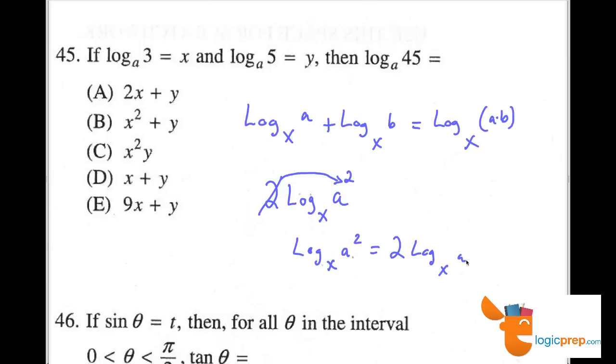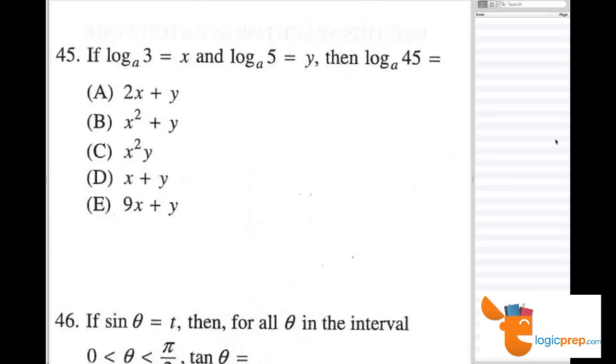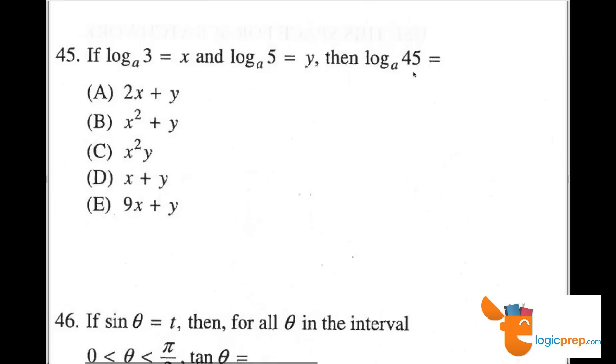So if we know those two rules, we're now equipped with the log rules we need to answer this problem. Now, we have 45 and we have to ask ourselves, well, how would we get 5 and 3 to make 45?